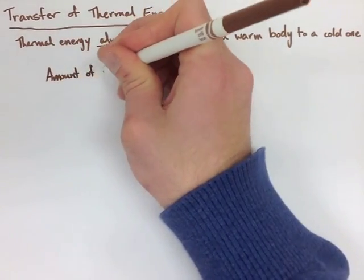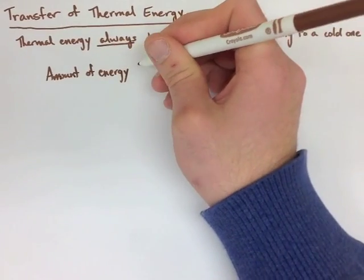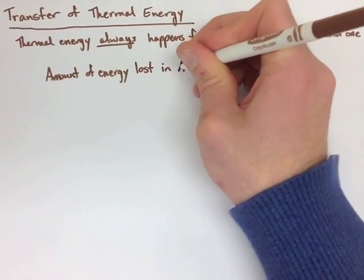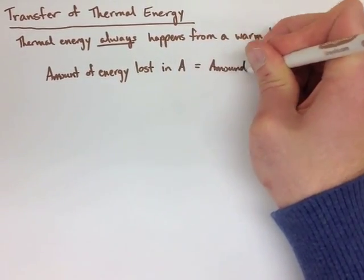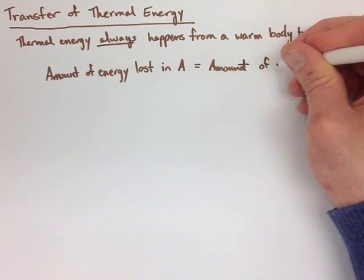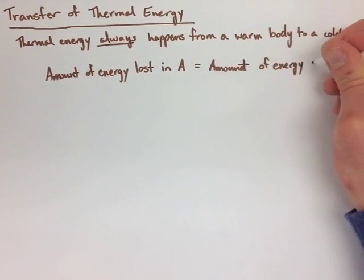Another thing we need to look at is the amount of energy lost in one system to another one is just a transfer. So if we look at the amount of energy lost in system A, it's going to equal the amount of energy gained in system B.